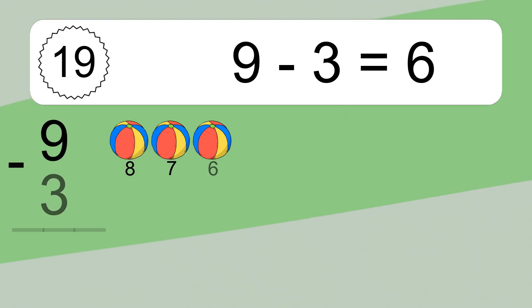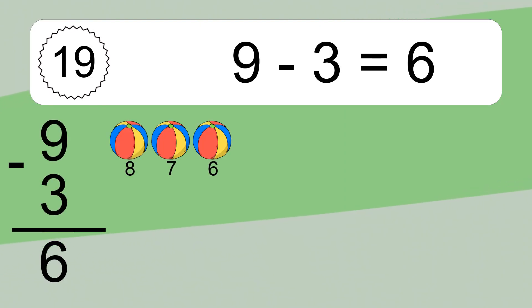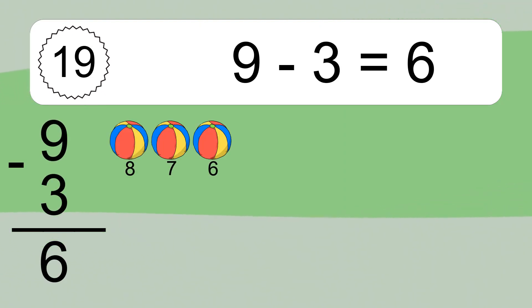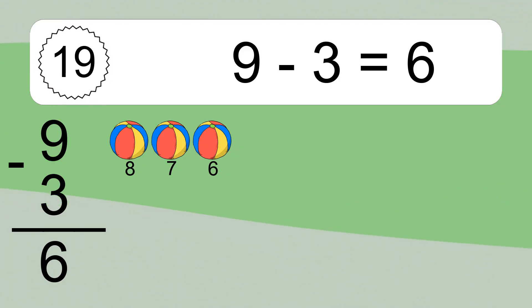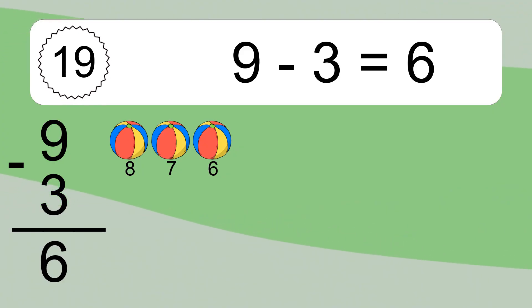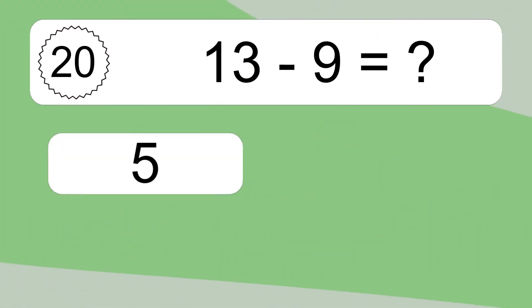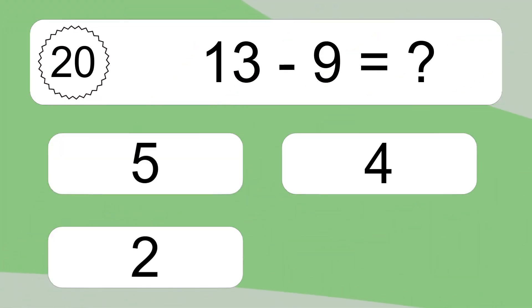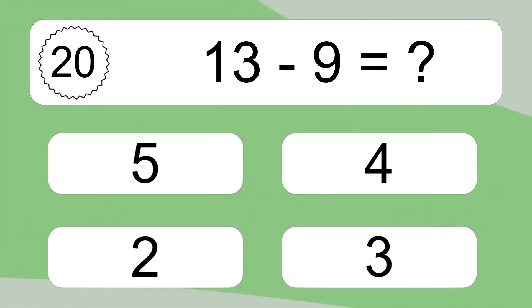9 minus 3 equals what? 9 minus 3 equals 6. Let's count it: 8, 7, 6.